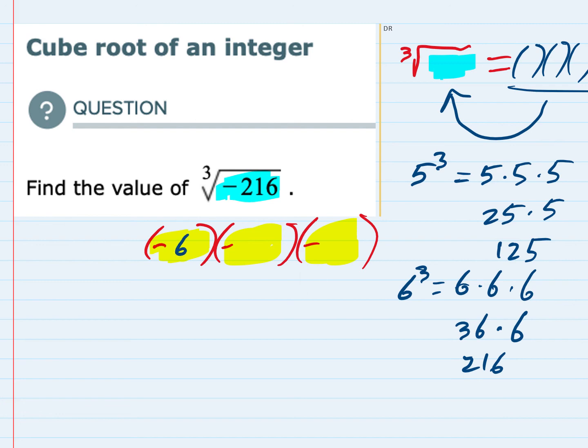We would want negative six times negative six times negative six to give us negative 216. Therefore, the cube root of negative 216 is negative six because negative six times negative six times negative six is negative 216.